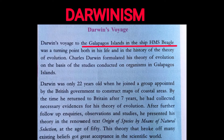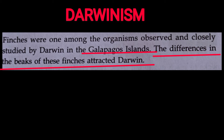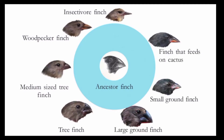Darwinism: Charles Darwin's voyage to the Galapagos Islands on the ship HMS Beagle was a turning point in his life. He presented the theory of Origin of Species by means of Natural Selection, based on differences in beaks of Galapagos Island finches.